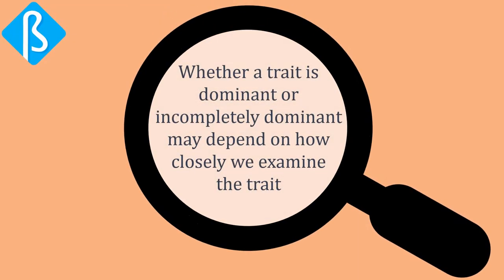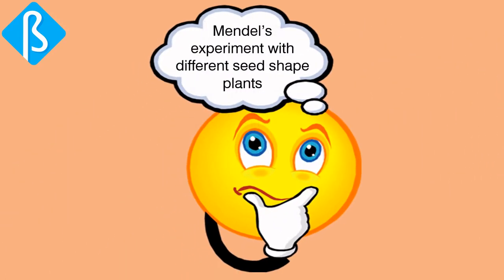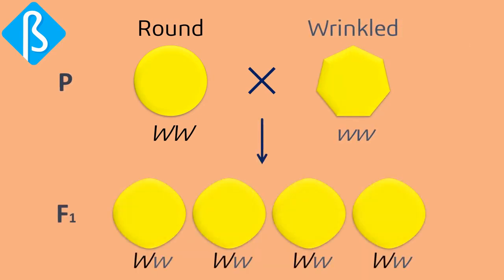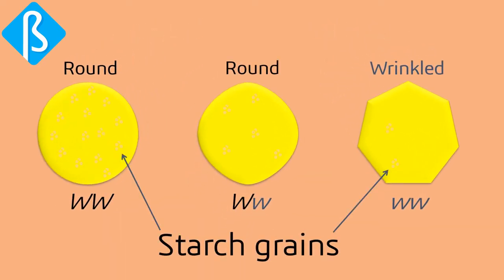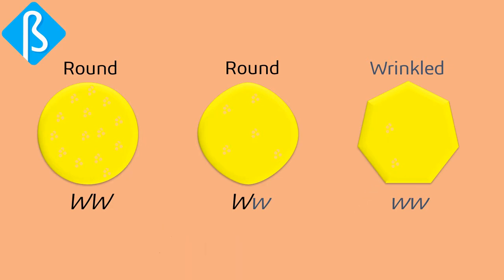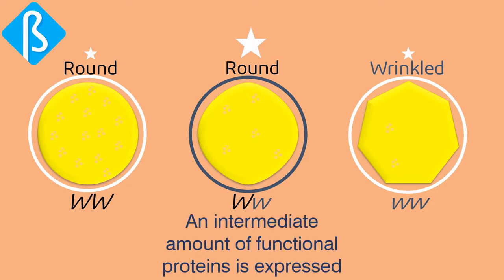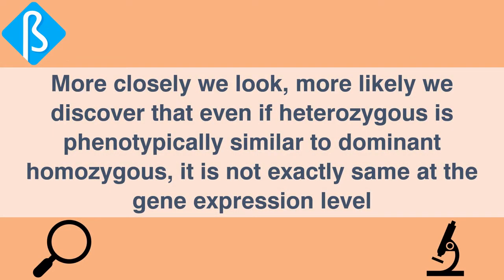This means our judgment of whether a trait is dominant or incompletely dominant may depend on how closely we examine it. Consider Mendel's experiment with seed shape: homozygous round seeds crossed with homozygous wrinkled seeds gave heterozygous round seeds. But looking closer, round seeds have more starch grains than wrinkled seeds. Heterozygous round seeds under a microscope contain an intermediate number of starch grains, because an intermediate amount of functional protein is expressed — not enough to produce as many starch grains as the homozygous dominant.